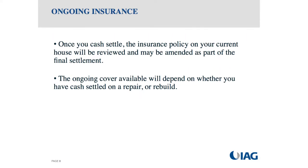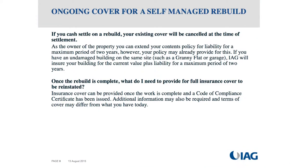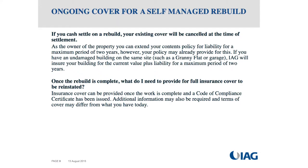On ongoing insurance: once you cash settle, the insurance policy on your home is reviewed. If you cash settle on a rebuild, your existing cover is cancelled — if the house was worth $500,000 and we pay $500,000, there's nothing left to insure. As the property owner, there may be an option to extend contents cover for liability. Once the rebuild is complete, we will reinstate cover. For IAG customers, provided there are no events that change the landscape between settlement and rebuild, we will reinstate cover upon receiving a code of compliance certificate.